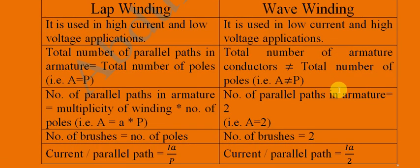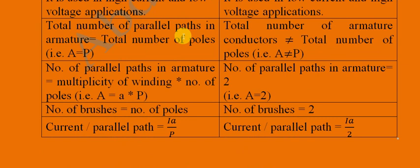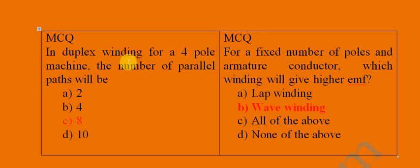My next video is about losses in DC generators — two types of losses: eddy current losses and hysteresis losses, covering magnetic flux density, frequency, thickness of lamination, and volume of the core. If you have any problems, write in the comment section. If you understood the concept of lap and wave winding, basic differences, mathematical descriptions, and MCQs including duplex and triplex winding, please subscribe.